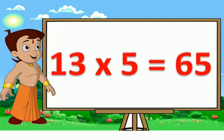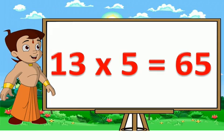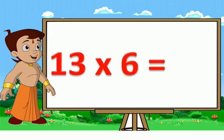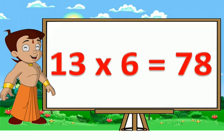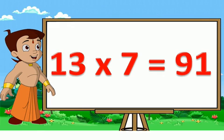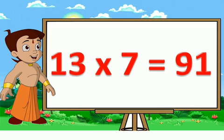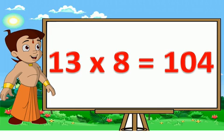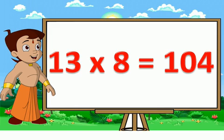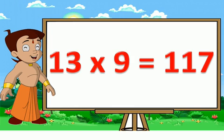13 fives are 65. 13 sixes are 78. 13 sevens are 91. 13 eights are 104. 13 nines are 117.